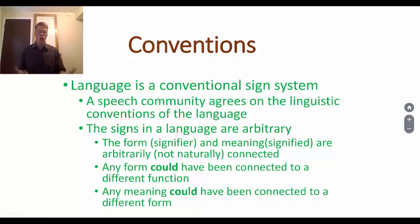The signs in the language are arbitrary. The form, signifier, and meaning signified are arbitrarily connected. That is, bunny could have meant anything else. But it just happened to be fixated on that particular fuzzy furry animal. Any form could have been connected to a different function. Any meaning could have been connected to a different form.